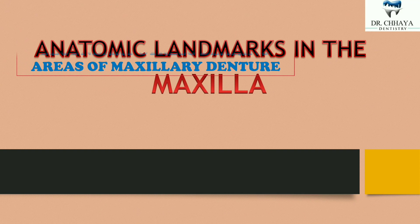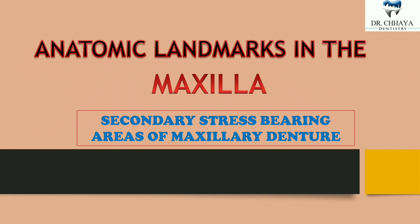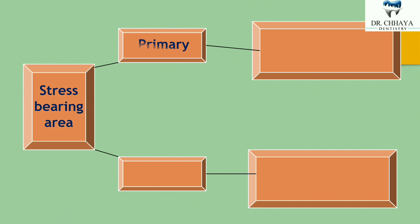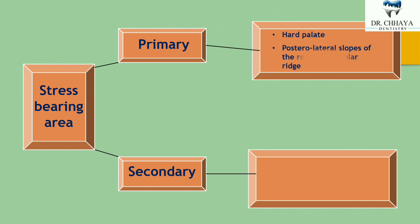Hello learners, today we will be studying about the secondary stress bearing areas of the maxillary denture. I am Dr. Chai Pande, your mentor. In the previous video on the primary stress bearing areas of the maxillary denture, we learned that stress bearing areas are divided into primary and secondary. Primary stress bearing areas are of two types: hard palate and posterolateral slope of the residual alveolar ridge, which we already covered. Now let's move on to the secondary stress bearing areas.